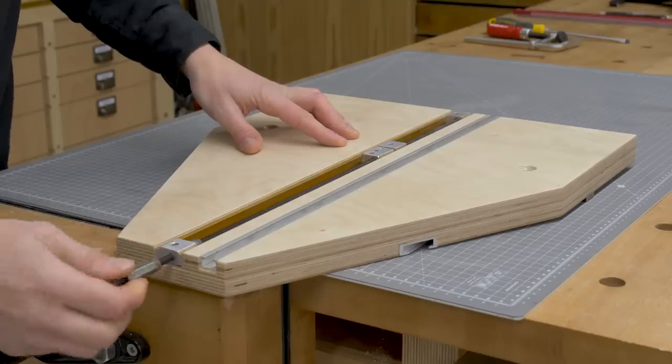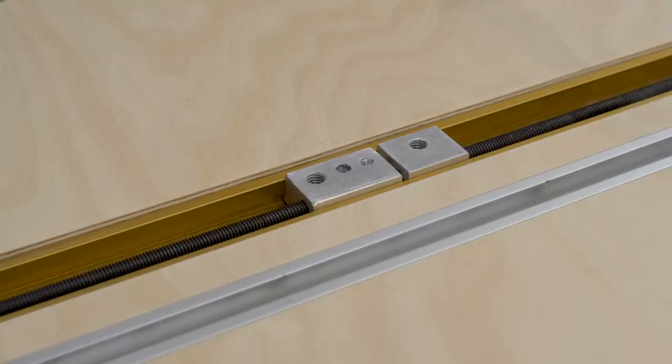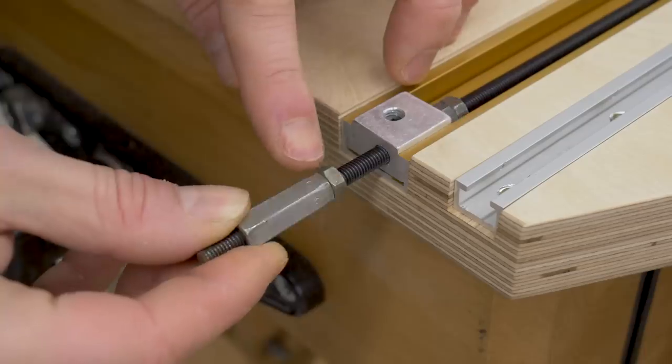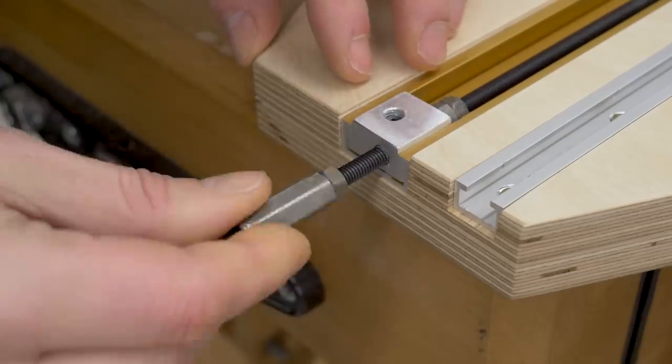By turning a threaded rod I can accurately adjust the desired cutting radius. Each complete turn of the rod moves it one millimeter. I mark the coupling nut with some numbers to use as a reference.